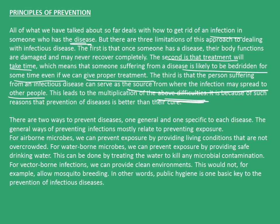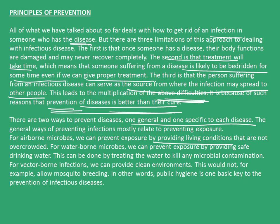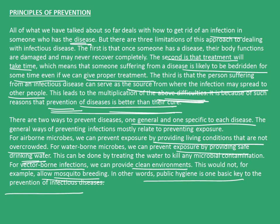It is because of such reasons that prevention of disease is better than cure — a famous saying as well. There are two ways to prevent diseases: one general and one specific to each disease. The general ways of preventing infections are mostly related to preventing exposure. For airborne microbes, we can prevent exposure by avoiding overcrowded living conditions. For water-borne microbes, we can prevent exposure by providing safe drinking water, treating it to kill any microbial contamination. For vector-borne infections, we can provide clean environments — for example, not allowing mosquito breeding. In other words, public hygiene is one basic key to prevention of infectious diseases.